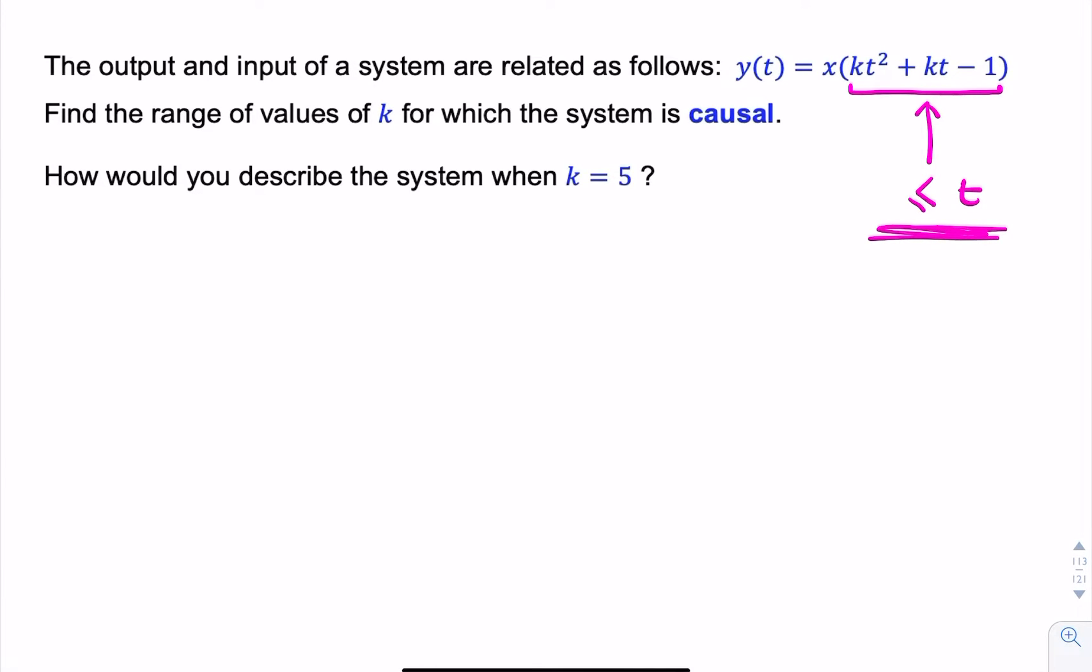A causal system can never anticipate the future. So when we have t equals t, we can't be looking at x at any other instant in the future. We can look in the past, but not in the future.